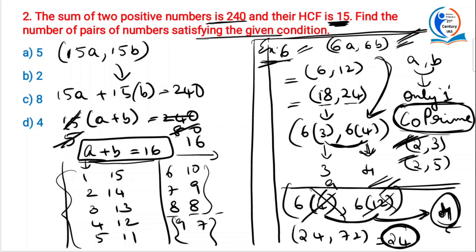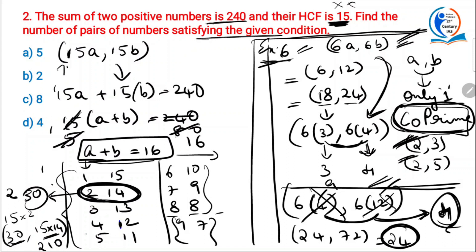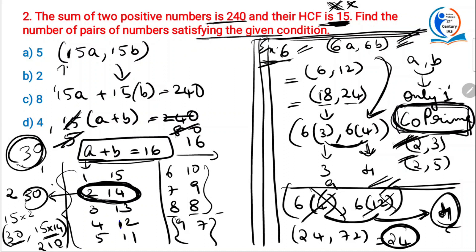For example, if you take the pair 2 and 14, the HCF of 2 and 14 is 2. If you substitute: 15×2=30 and 15×14=210. The HCF of 30 and 210 is 30, not 15 — the condition is violated. So you cannot take numbers that have common factors other than 1. That is the concept of co-prime. You should eliminate options which are not co-primes.